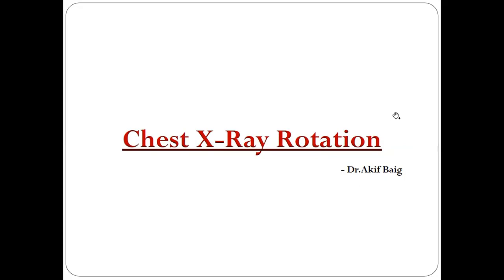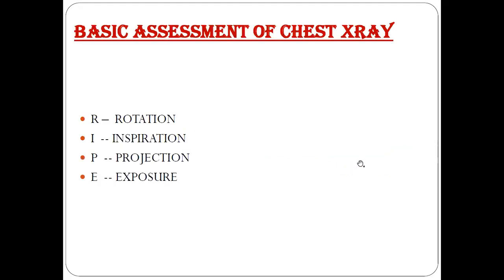Good morning everyone. Today we'll be talking about chest x-ray rotation — how to tell if a chest x-ray is rotated, centrally placed, or rotated rightward or leftward. Before interpreting findings of the lungs and heart, there is a basic assessment code called RIPE: R means rotation, I means inspiration, P is projection, and E is exposure.